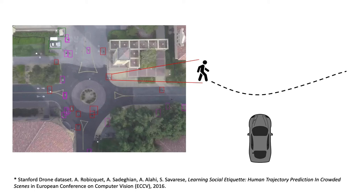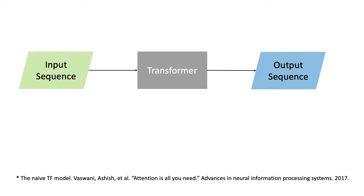In densely populated environments and make safe and responsible decisions. The transformer is a deep learning technique that has shown advantages over existing architectures, such as recurrent neural networks, for sequence-to-sequence prediction problems.